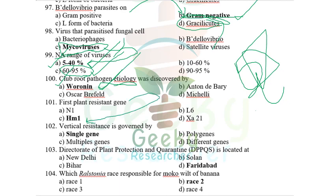The first plant resistance gene is HM1, isolated by Briggs and Walton in 1991 from maize (corn). Vertical resistance is governed by a single gene (monogenic), whereas horizontal resistance is governed by many genes (polygenic). The Directorate of Plant Protection Quarantine and Storage (DPPQS) is located at Faridabad, Haryana, established in 1946 under the British government.